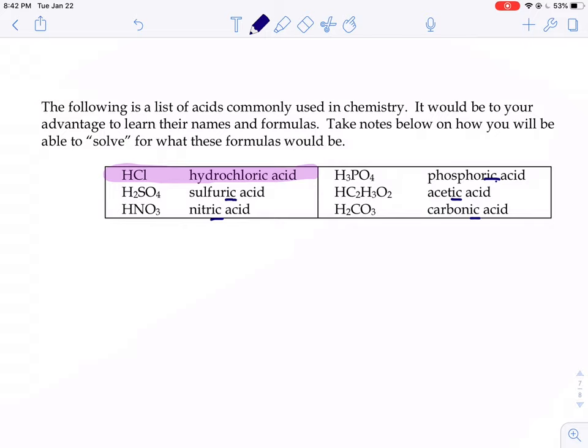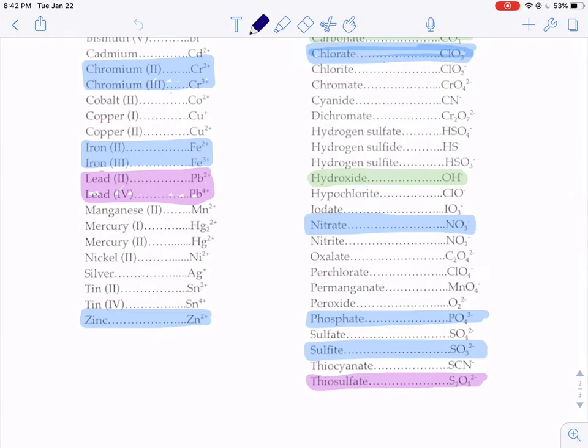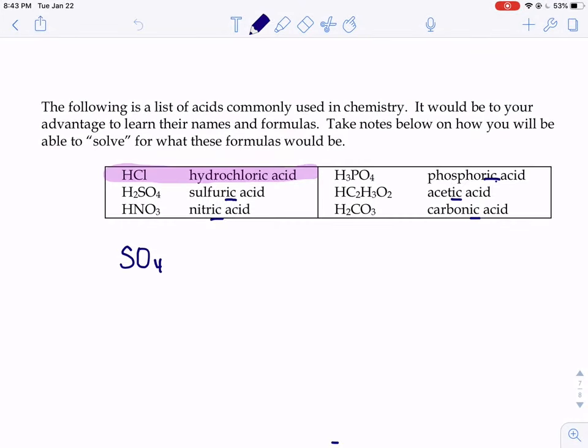SO4, when you look up, for example, what SO4 is called on your ion sheet, SO4 is down here. SO4 is called sulfate. So that's sulfate.